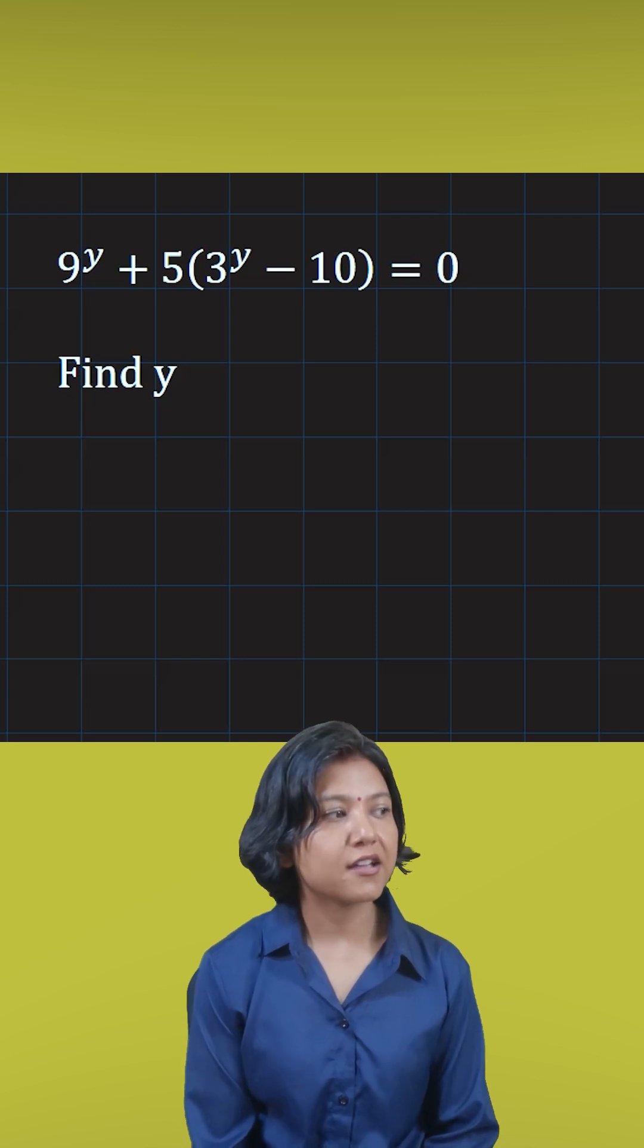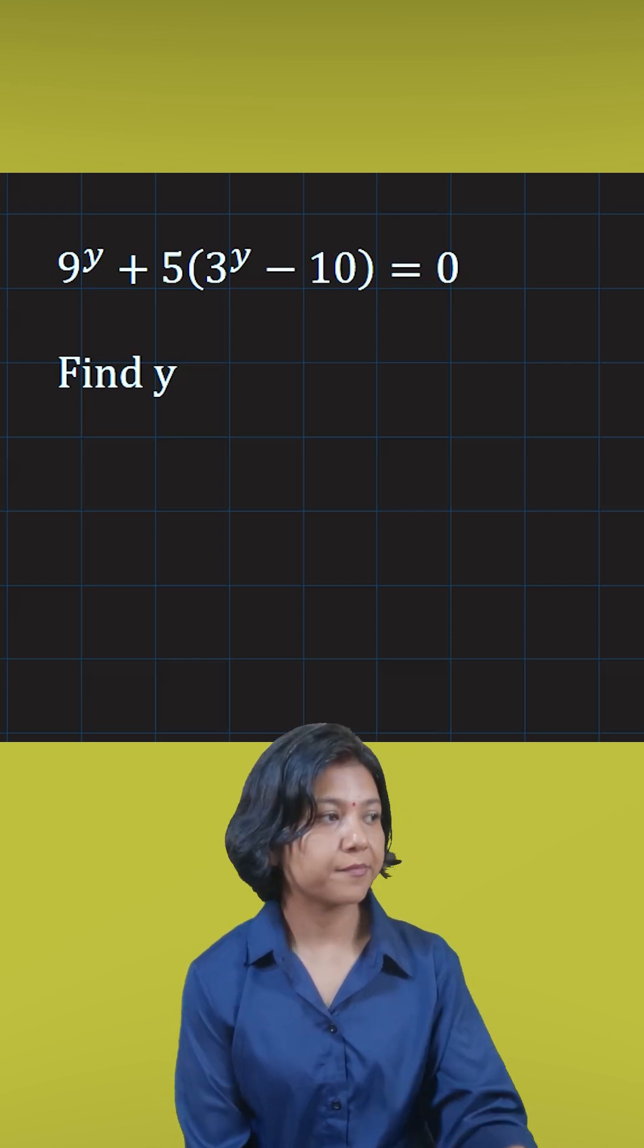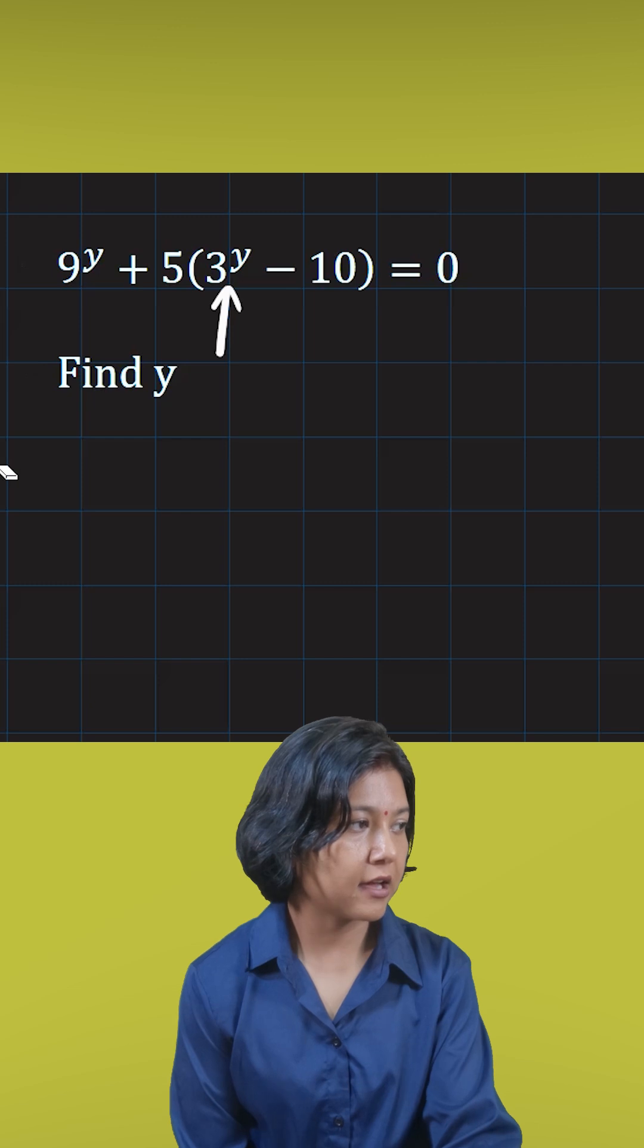If you look at this question, you see there are some exponential terms. You have 3 to the power of y, and on this side you have 9 to the power of y.